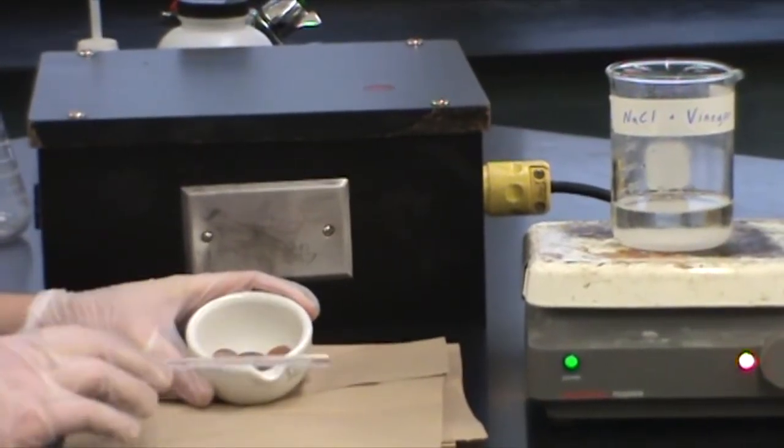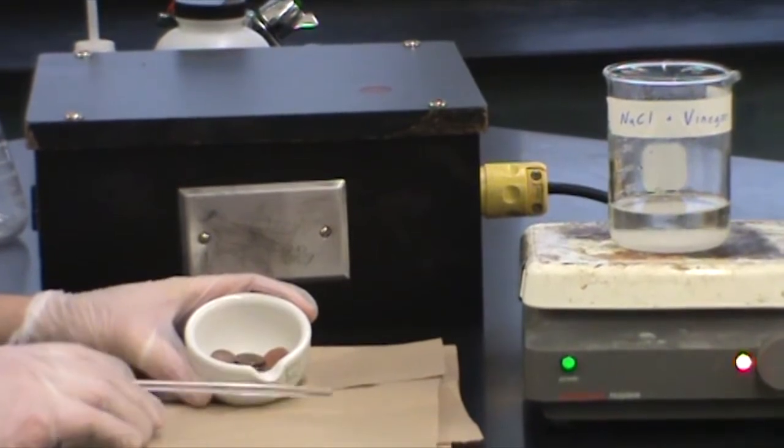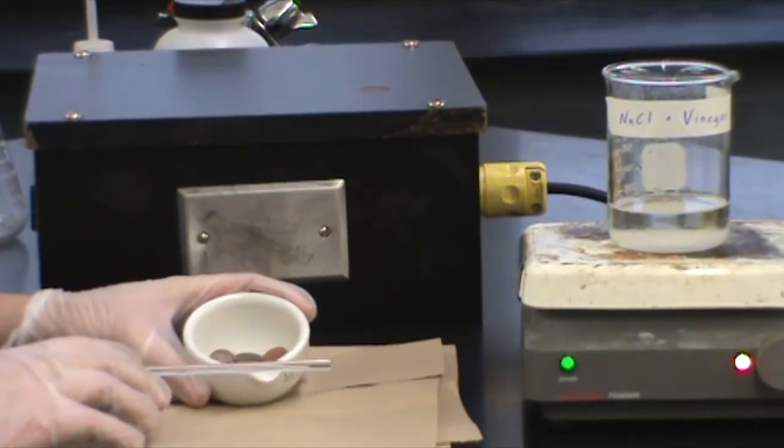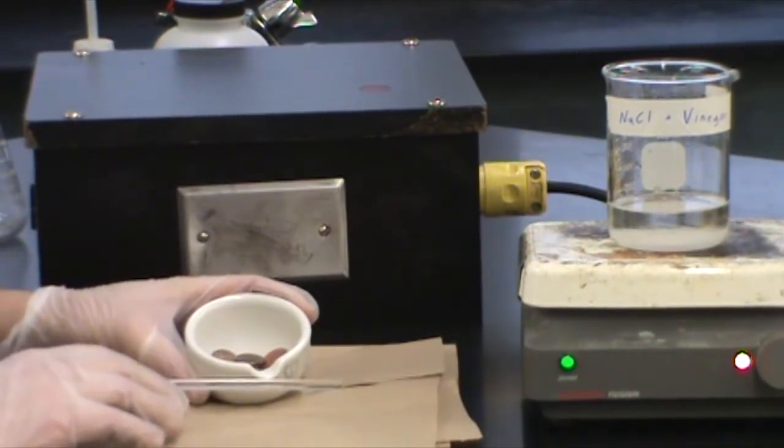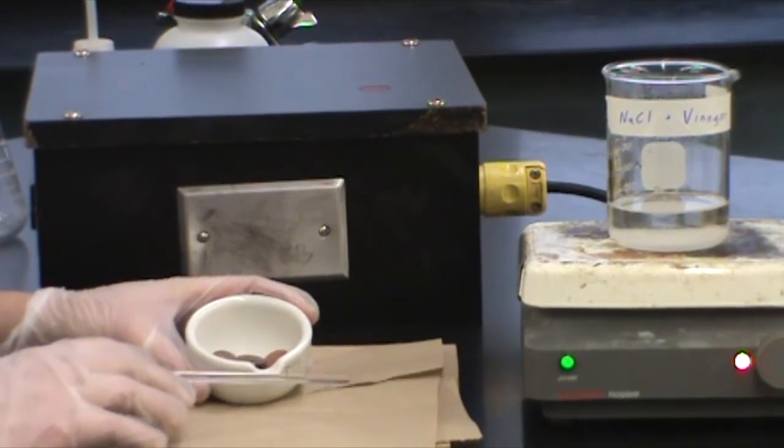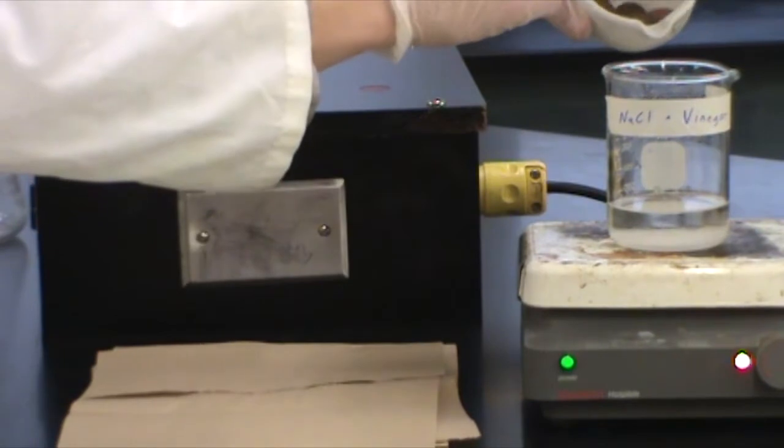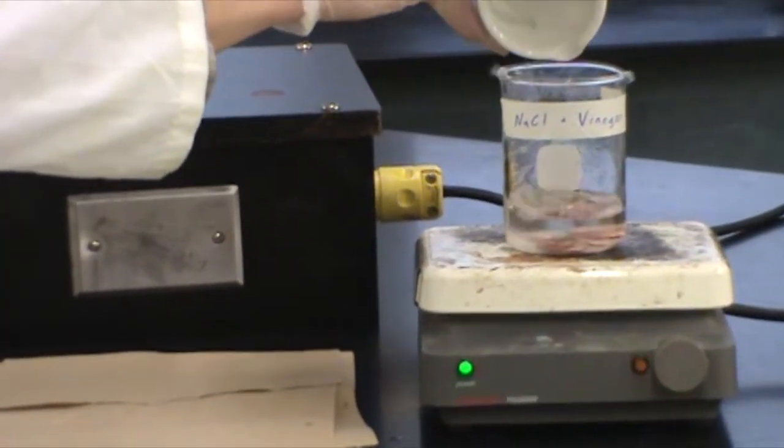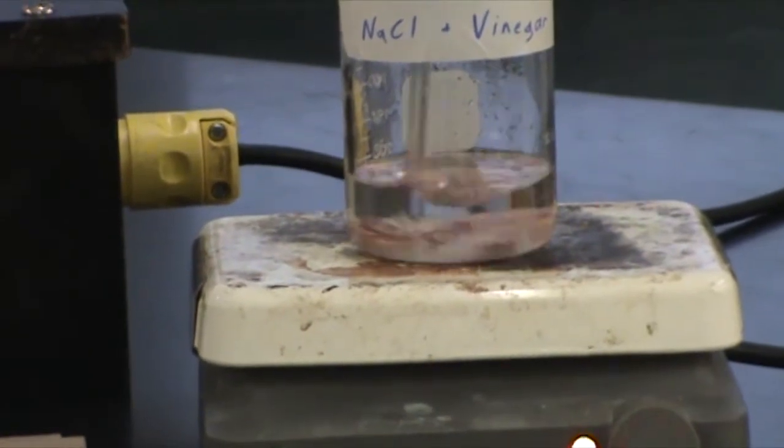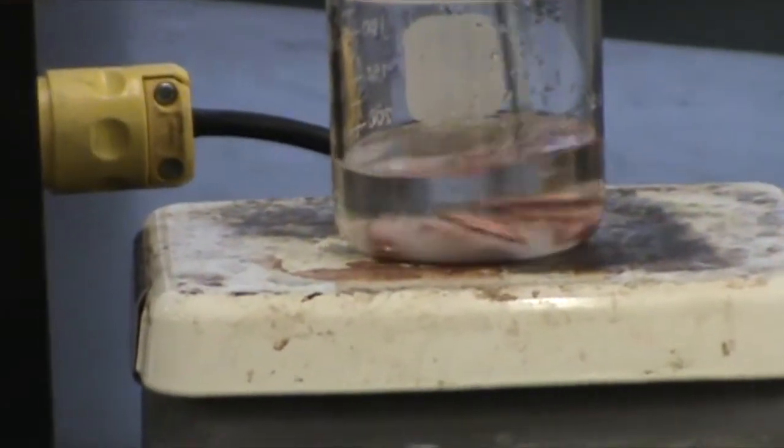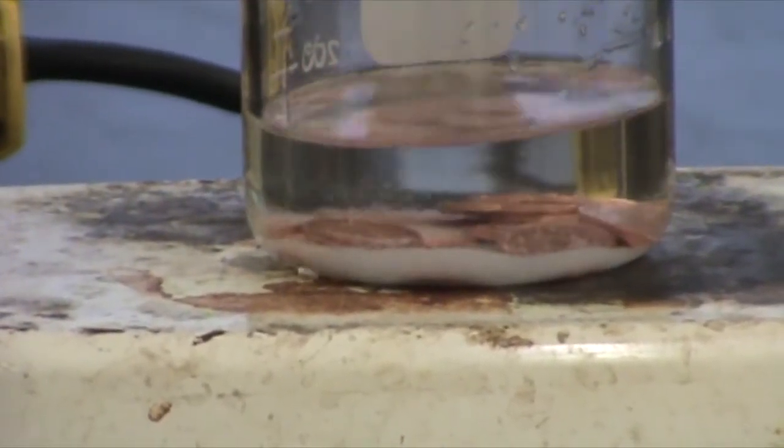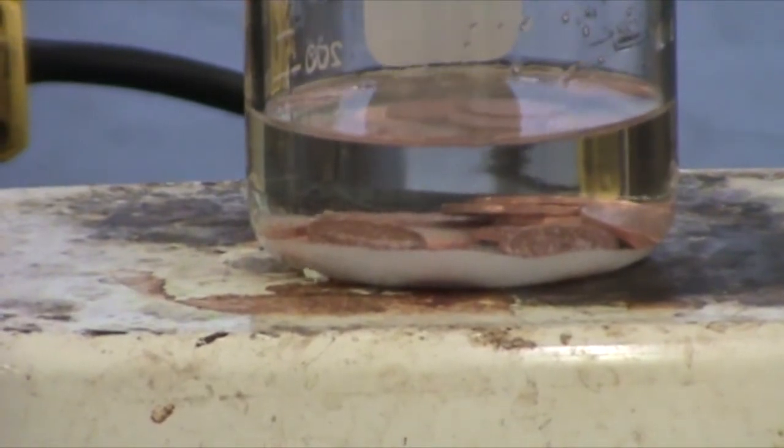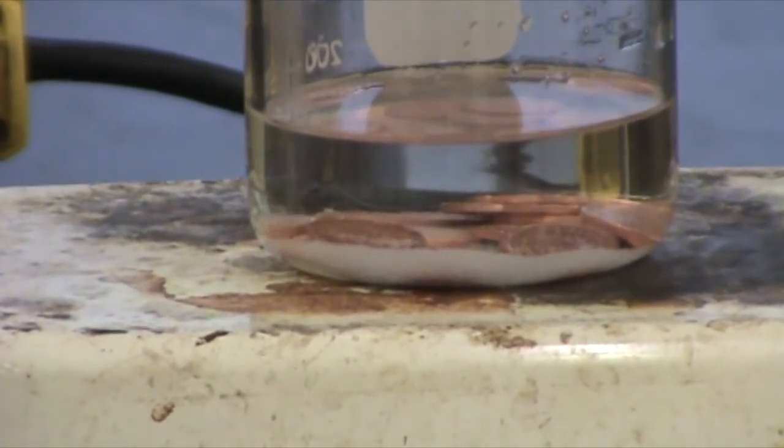The first step is to clean the copper pennies. Naturally the copper of the penny reacts with oxygen in the air to produce a dark greenish copper oxide coat that coats the penny. We'll dissolve this coating by bathing the pennies in a hot salt and vinegar solution. As you can see, the pennies are starting to shine. That coating has gone right off and it'll leave just the copper coating on the pennies.